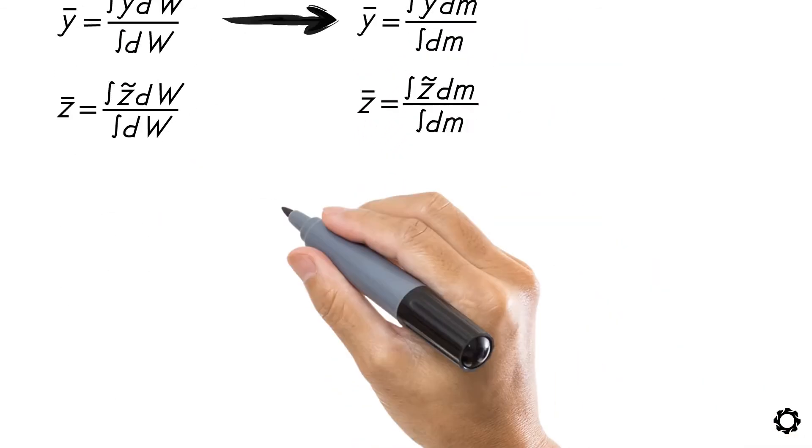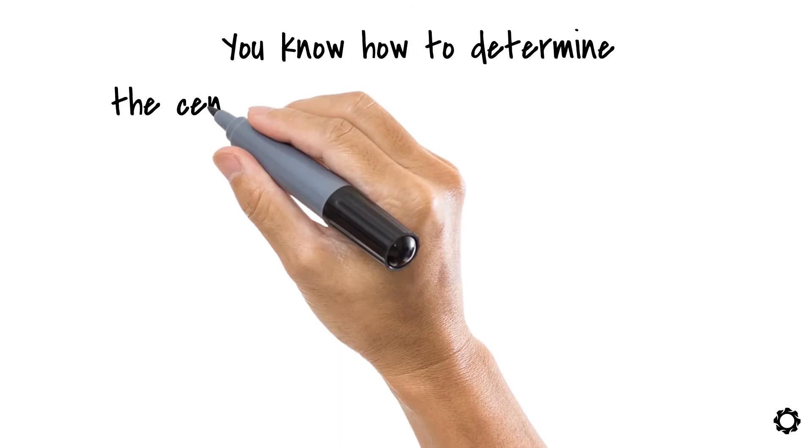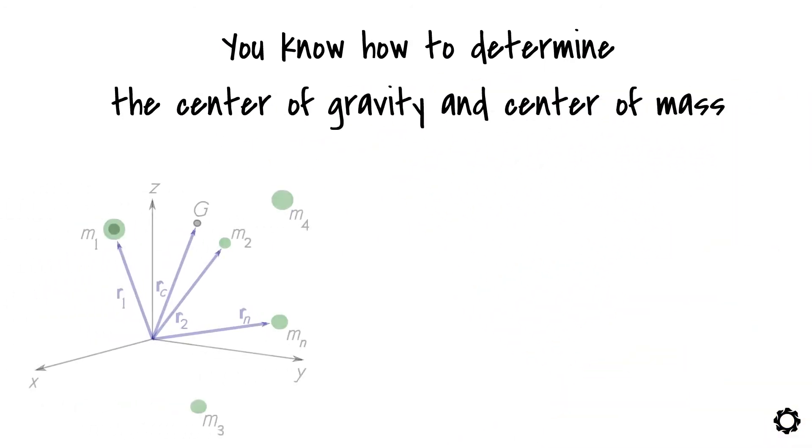There you have it. Now you know how to determine the center of gravity and the center of mass of a system of particles as well as for a rigid body.